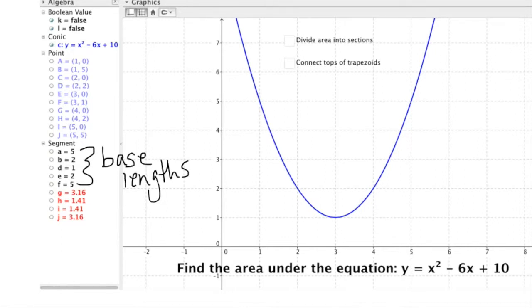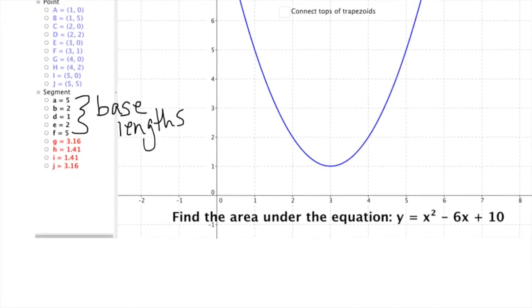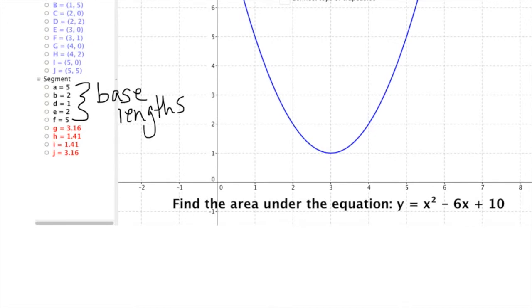The base lengths at x equals 1, 2, 3, 4, and 5 are right there for you. Keep in mind the heights of each of these trapezoids can be comparable to what we had before, because we don't have any skinnier trapezoids than 1 unit in width.